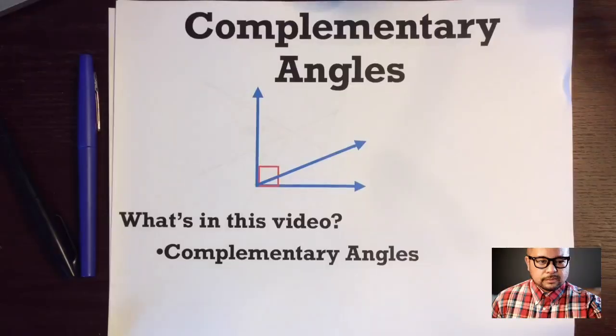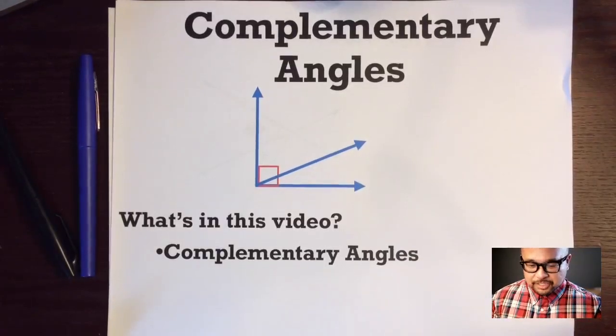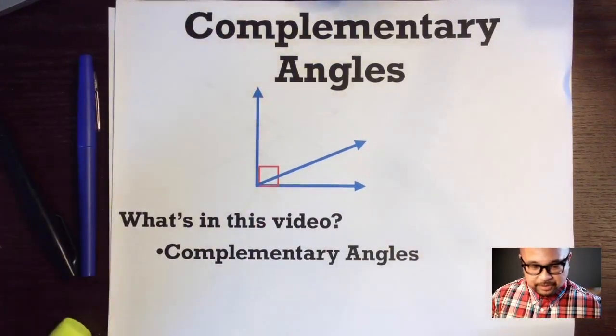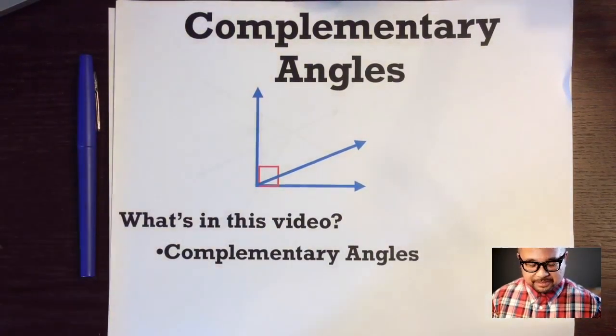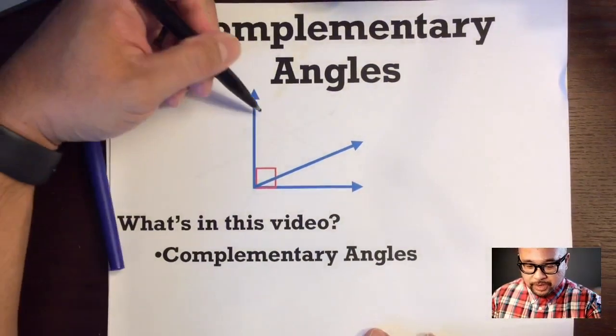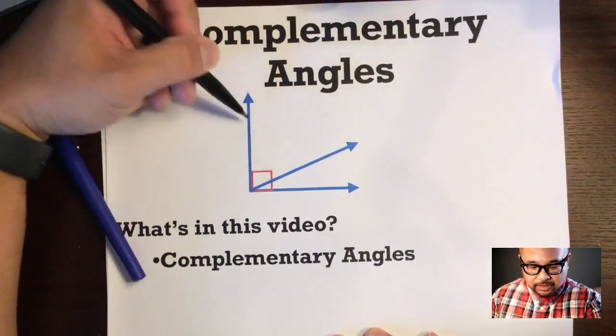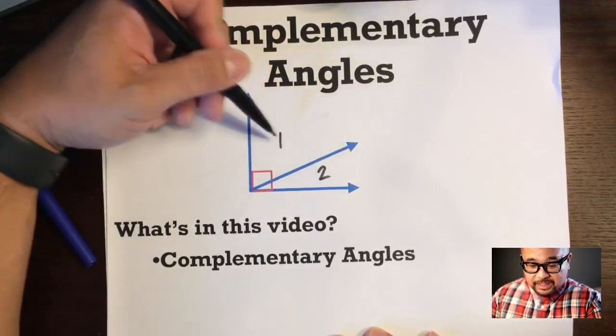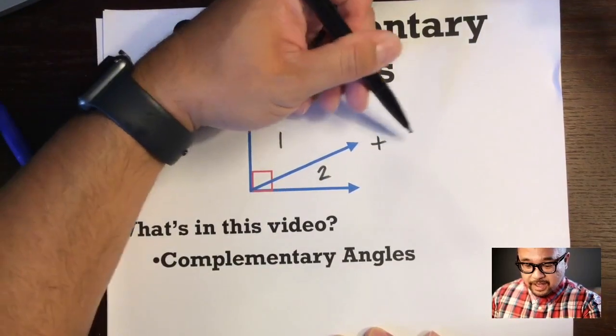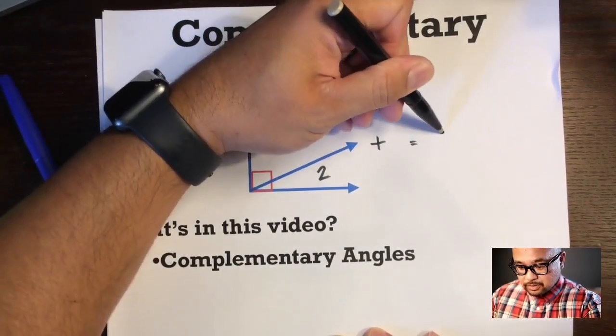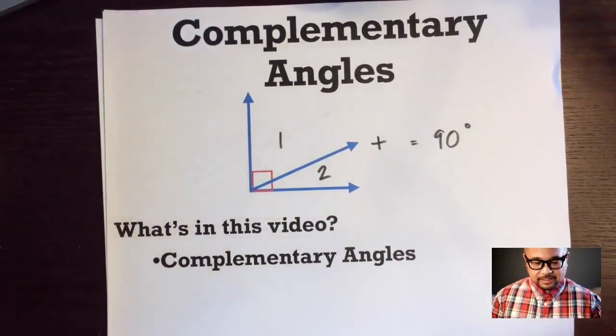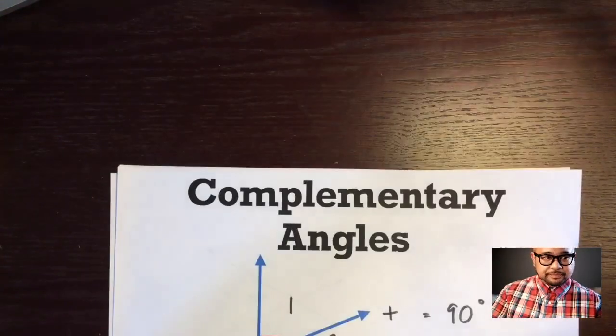So go out there and shoot people with compliments, but just remember those two guns put together add up to 90 degrees. So as mentioned, we are going to be talking about complementary angles. So what's in this video? Complementary angles. So complementary angles are two angles. Here's one angle right here and here's another angle right here, and these two angles add up to equal 90 degrees.